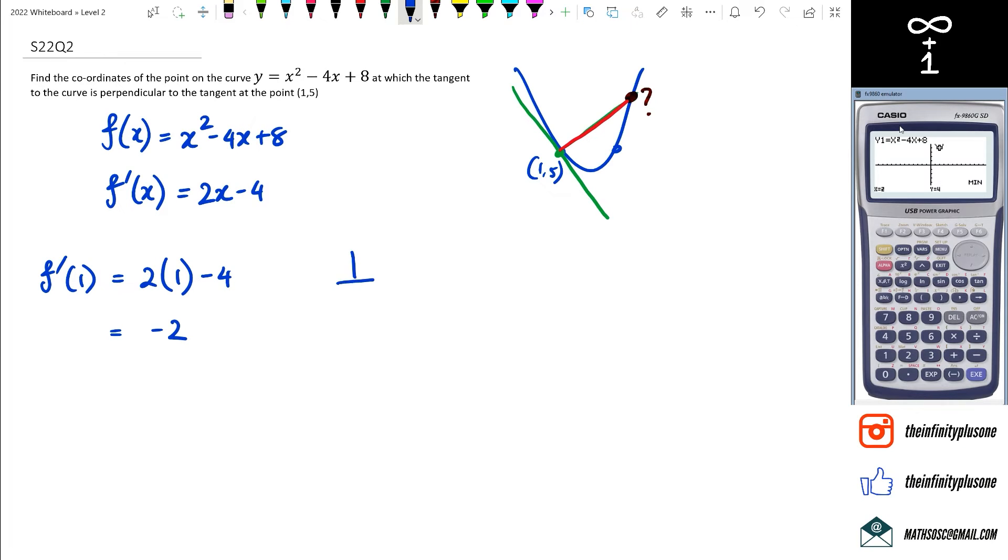Now, perpendicular gradient, which is this right here, it's just perpendicular M, is kind of saying negative 1 over M. Now, if you did coordinate geometry, you might remember this. So the perpendicular gradient in this case is going to be negative 1 divided by negative 2, which actually equals to 0.5.